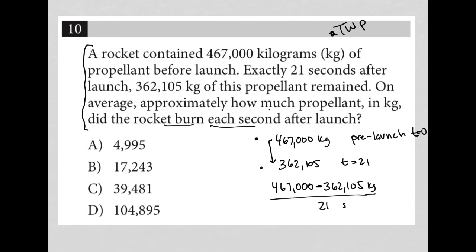So I go straight to my calculator, and I just type this in. 467,000 minus 362,105. I get that in my calculator. I'm going to just take that and divide by 21.